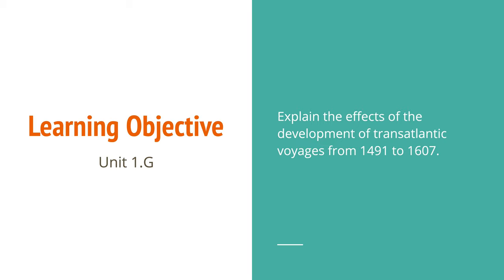All of the key concepts we're going to go over here in Topic 1.7 are going to be the same ones we talked about in Topic 1.1, Contextualizing Period 1. The big difference is the way in which we are interpreting these key concepts. Now we're focusing more on causation — what were the causes, how were things causing other things to happen, and what were the effects?